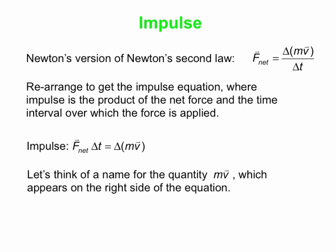What we've got here is the fact that there's some quantity, mass times velocity. The change in that quantity is directly connected to the net force multiplied by the time during which that net force acts. Let's invent a name for this quantity, m times v. What names can you come up with? How about we call this momentum?